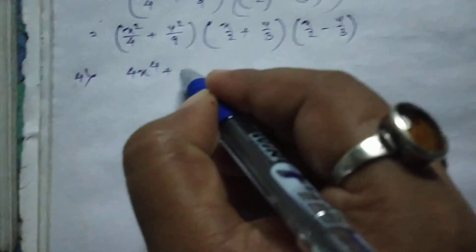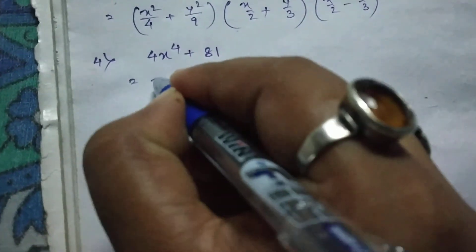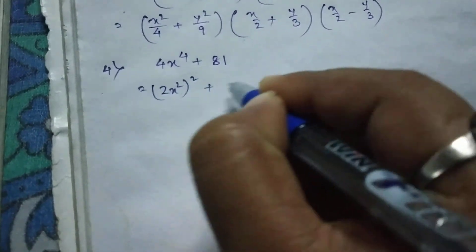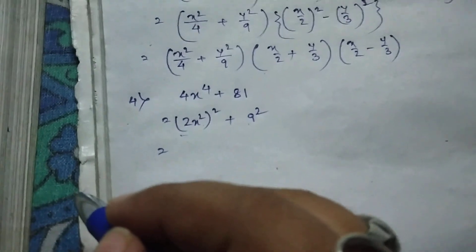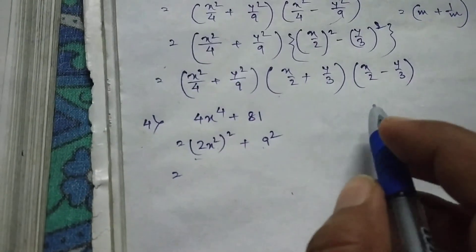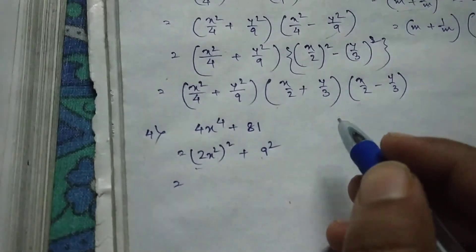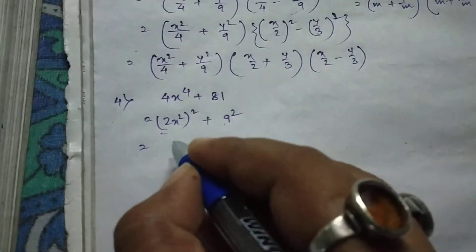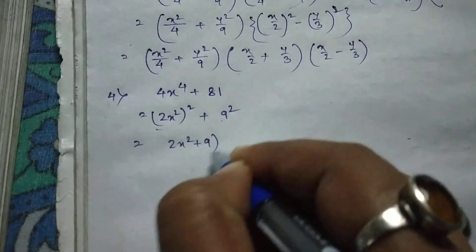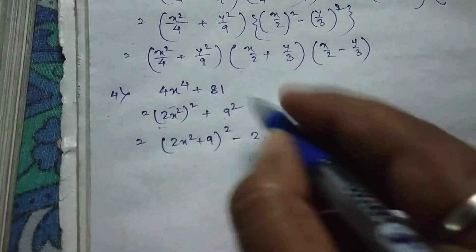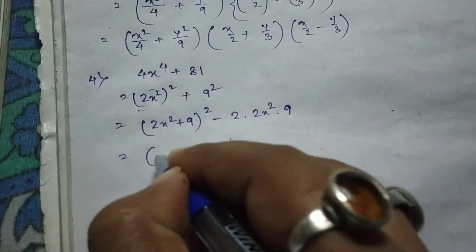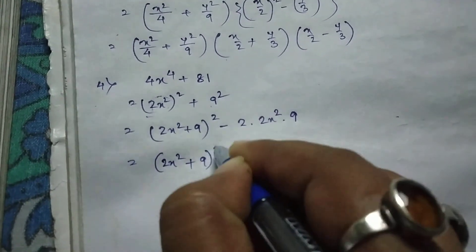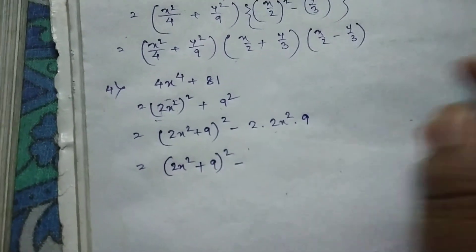x to the power 4 plus 81. We have 2 x square into 9. Minus 2 and minus 2 together, and times minus dot square. Minus 2 equation, then come with minus 2, cycle and multiply with minus 2, plus 2 into minus 2.